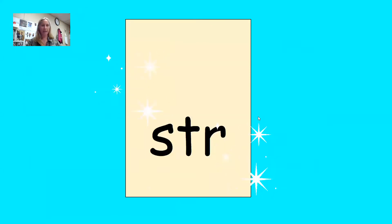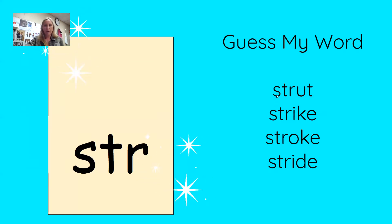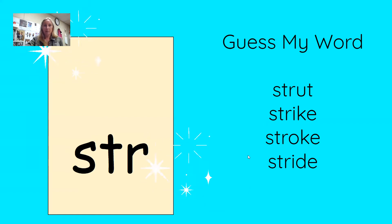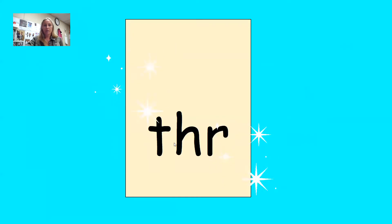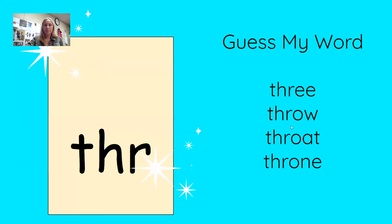Let's look at our next blend — we're not going to play the game here; I'm going to have you play at home. Have somebody pick a word or pick one yourself and make the clues. Our next three-letter blend is 'str.' Words to choose from: strut, strike, stroke, or stride. Our next blend is 'thr' — we have a digraph at the beginning with 'th' added to the R. Words: three, throw, throat, or throne.